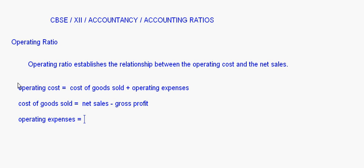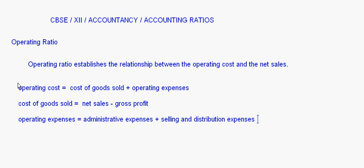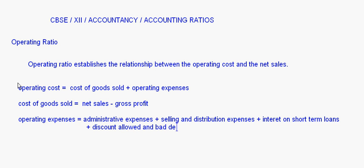Operating expenses will be equal to the administrative expenses plus selling and distribution expenses. In some questions, if you are given interest on short-term loans, this will also be added. And if discount allowed and bad debts are given, they will also be added to the operating expenses.